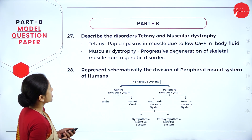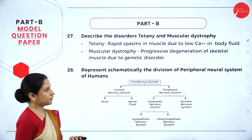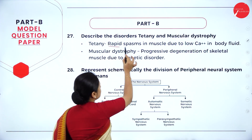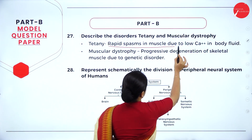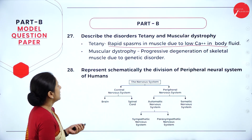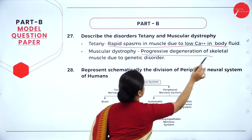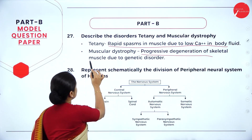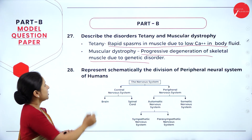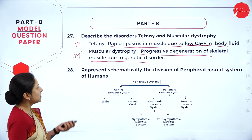Question 7: describe the disorders tetany and muscular dystrophy. Tetany involves rapid spasms in muscles due to low calcium ions in body fluid. Muscular dystrophy is progressive degeneration of skeletal muscle due to a genetic disorder. Each description carries one mark, totalling 2 marks.